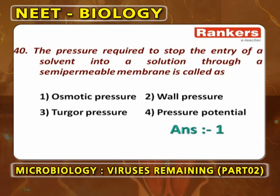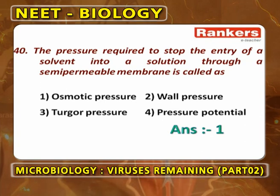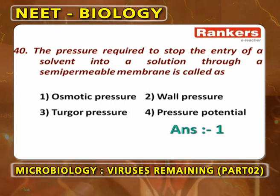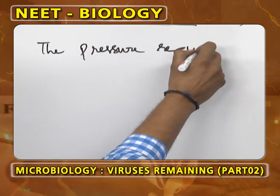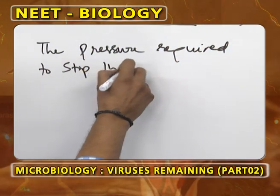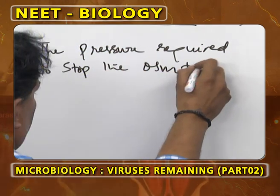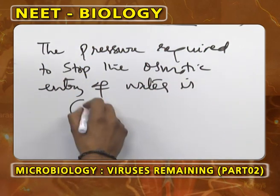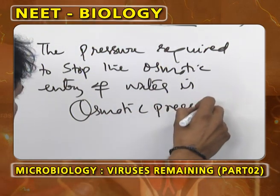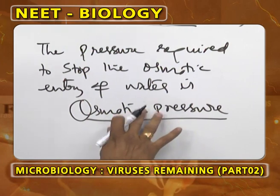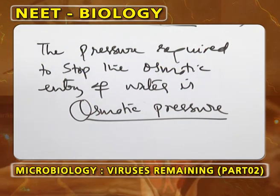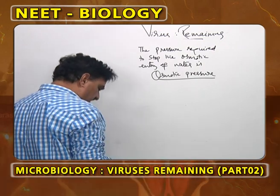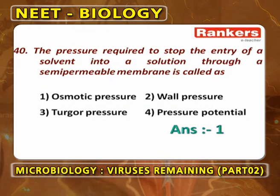The pressure required to stop the entry of a solvent into a solution through a semi-permeable membrane is called osmotic pressure. The pressure required to stop the osmotic entry of water into the cells is called osmotic pressure. Osmotic pressure is the pressure with which the entry of water into the cells is stopped.